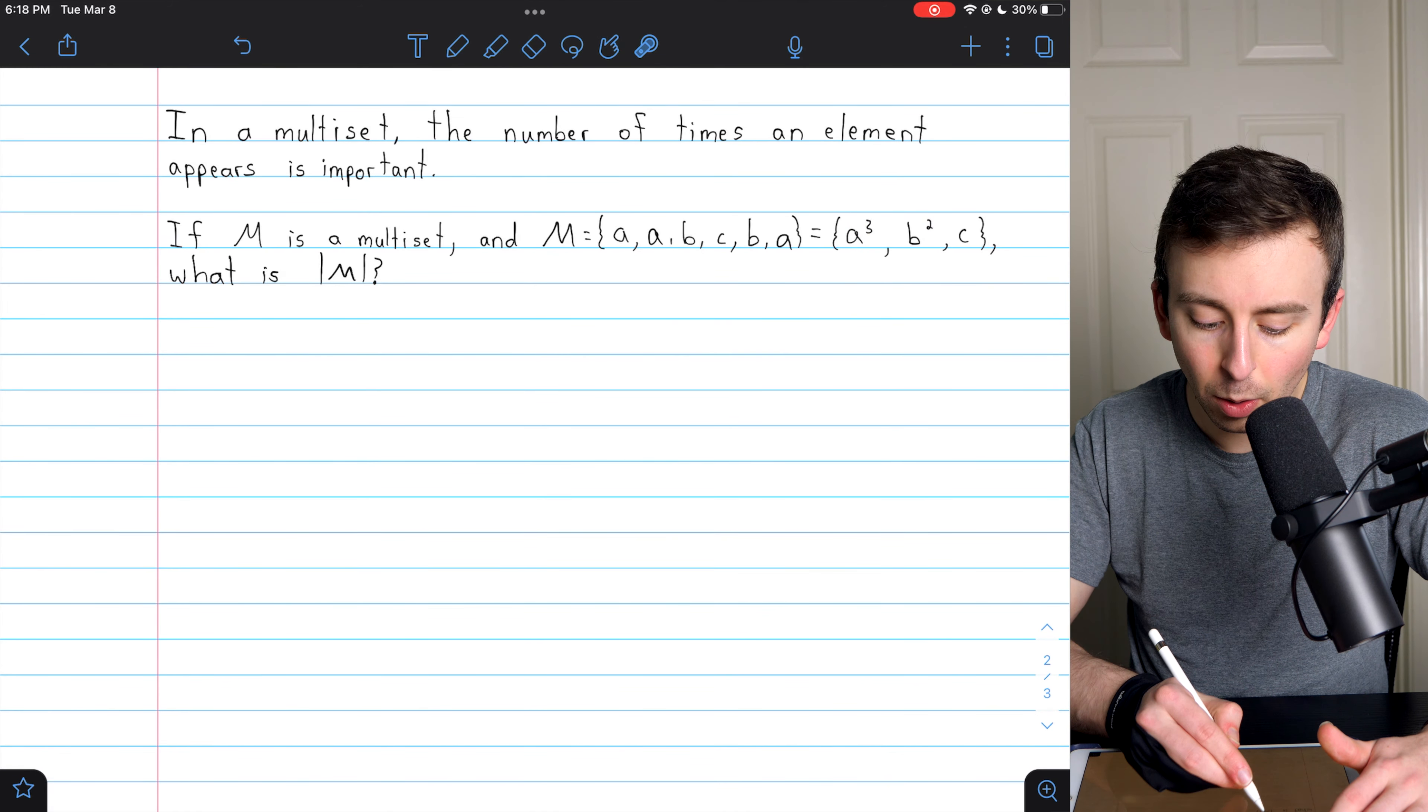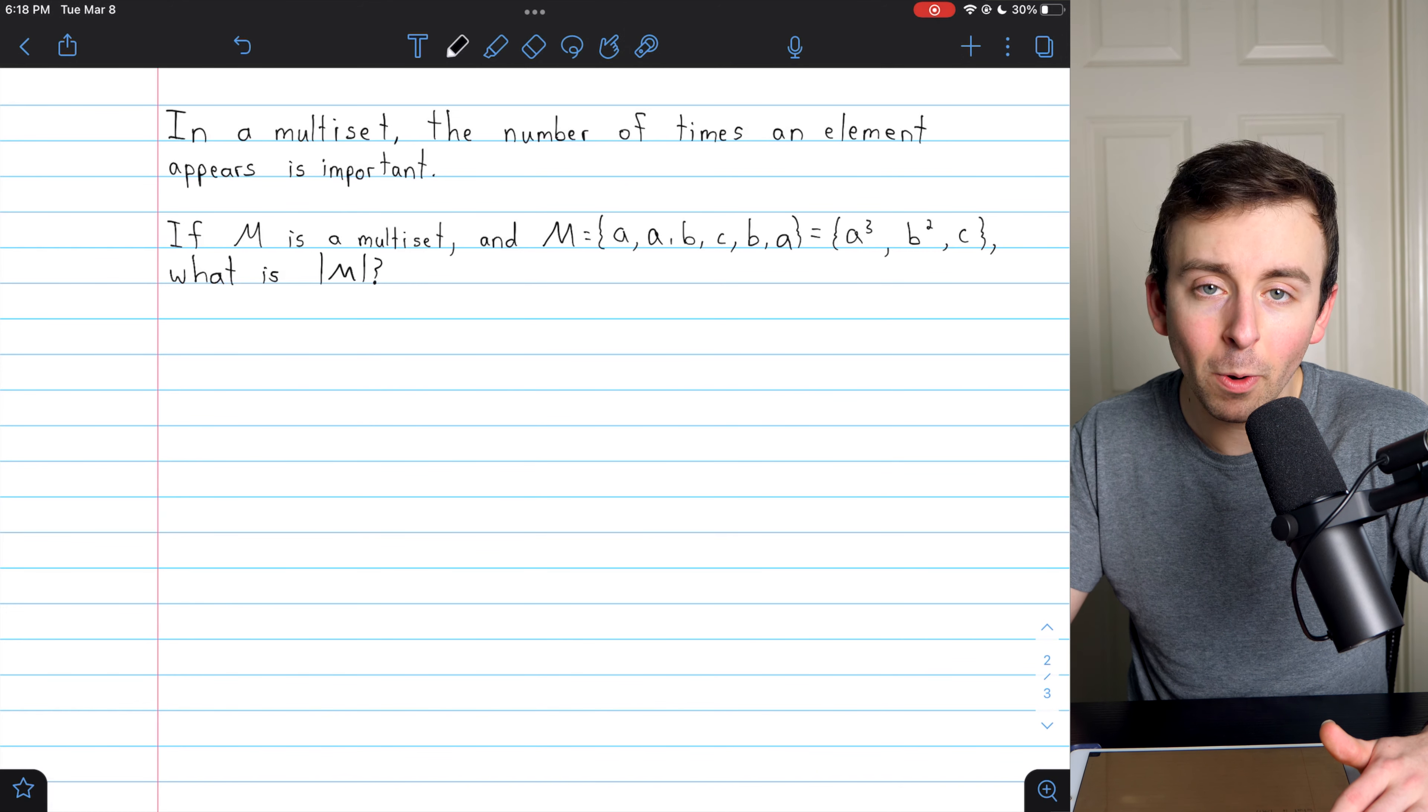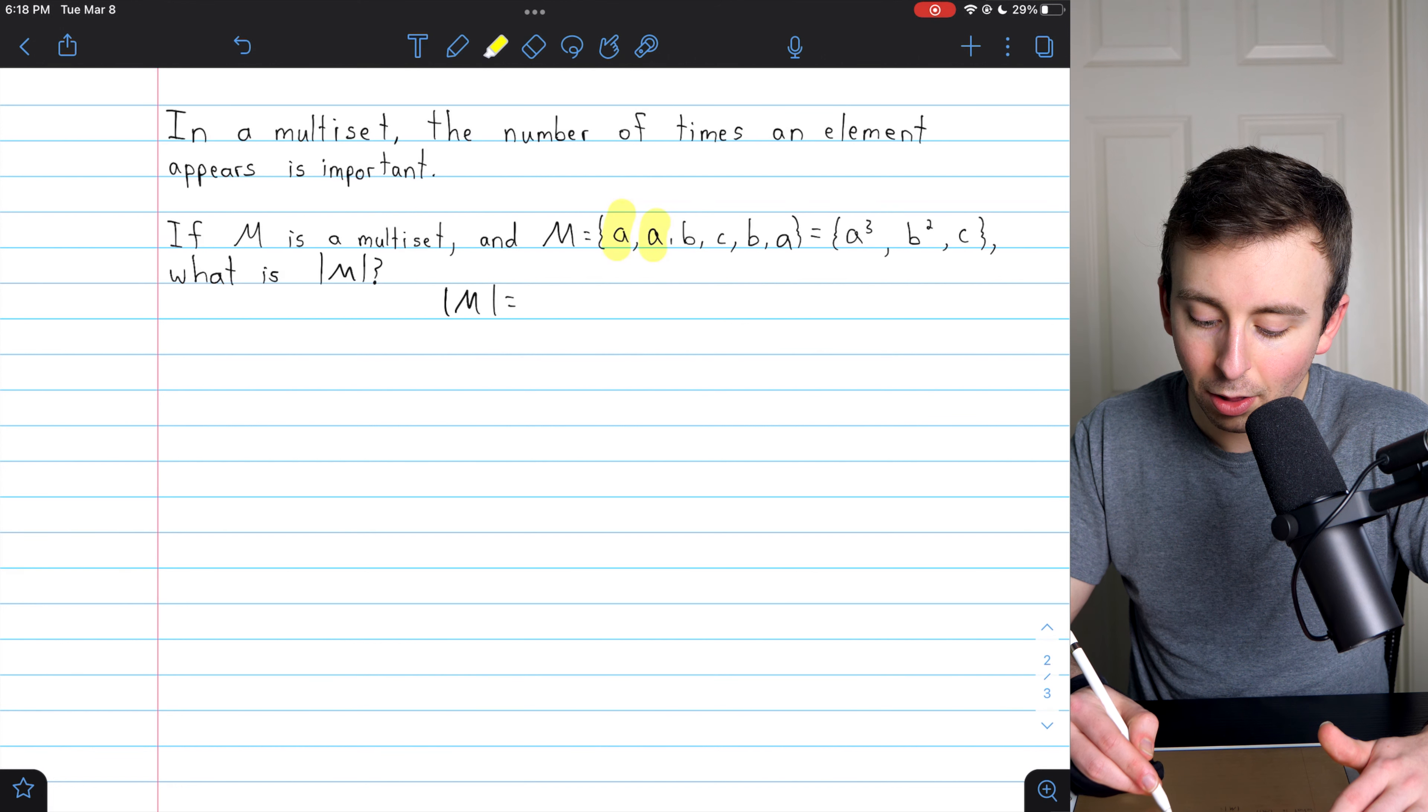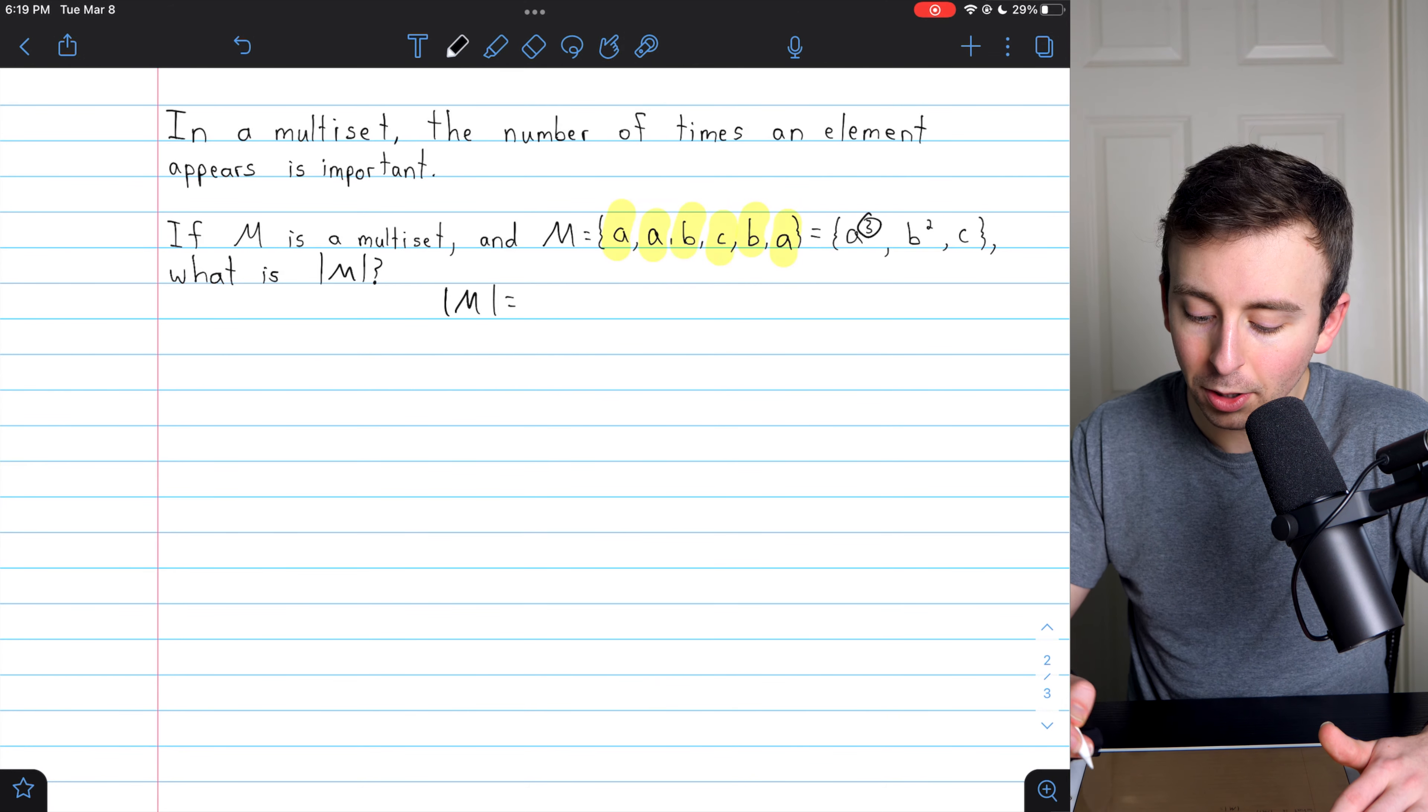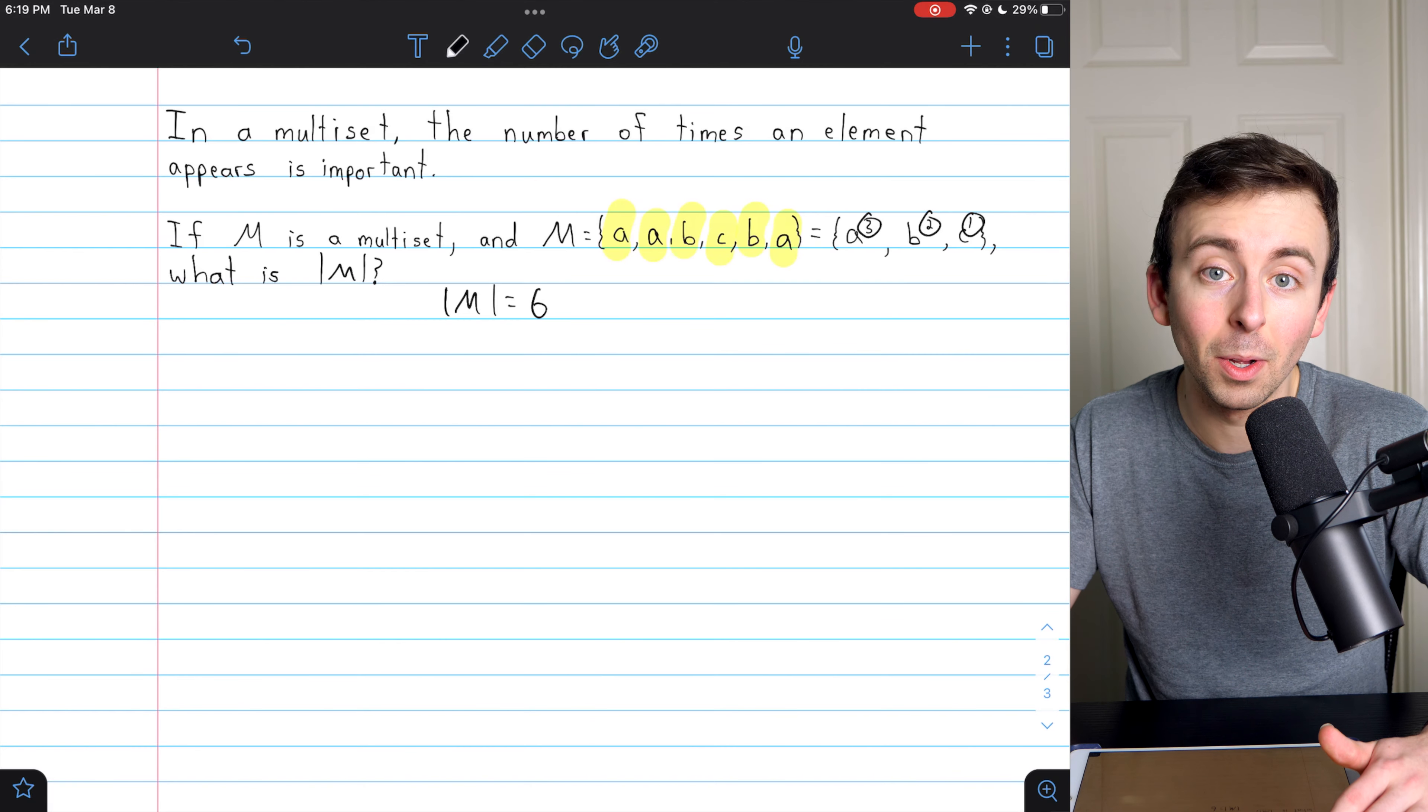So if this is a multiset, what's the cardinality of that set M, that multiset? Well, multisets are concerned with repetition. That is important. So in this multiset, the cardinality of M is one, two, three, four, five, six, which we could also find by adding up the multiplicities. A multiplicity of three plus a multiplicity of two plus the unwritten multiplicity of one gives us six total elements in the multiset M.